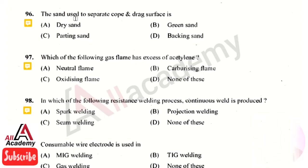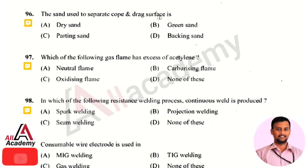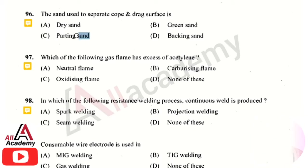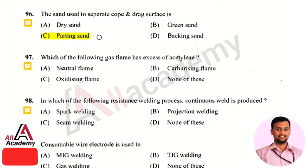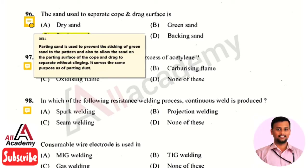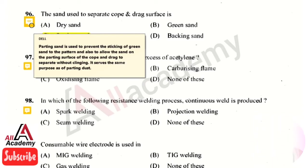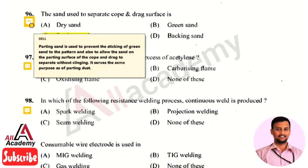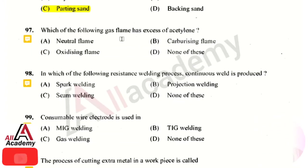The next question: the sand used to separate the cope and drag surface — the right answer is option 3, that is parting sand. Parting sand is used to separate the cope and drag surface. It prevents green sand from sticking to the pattern and allows sand on the parting surface of the cope and drag to separate without sticking.